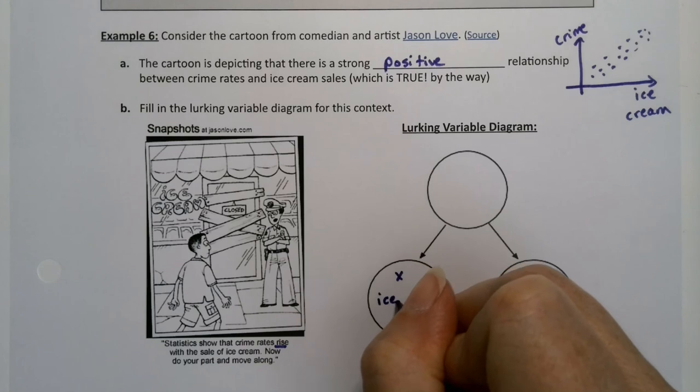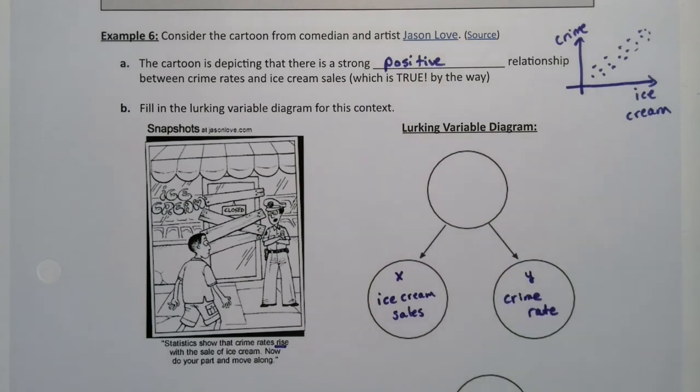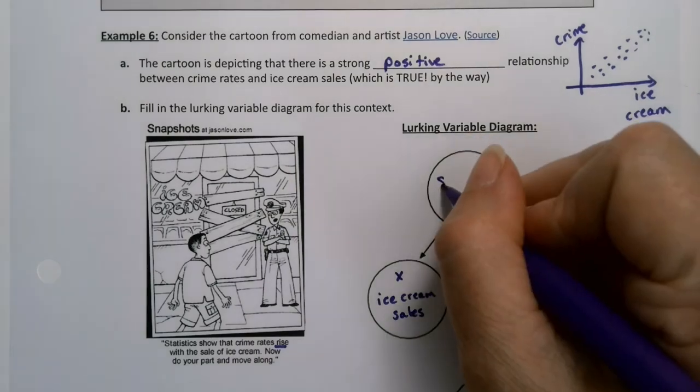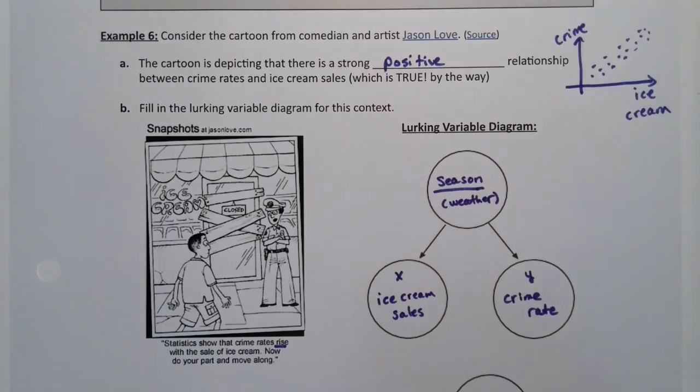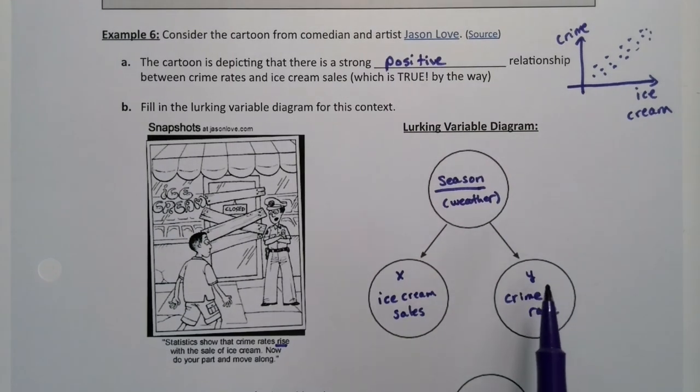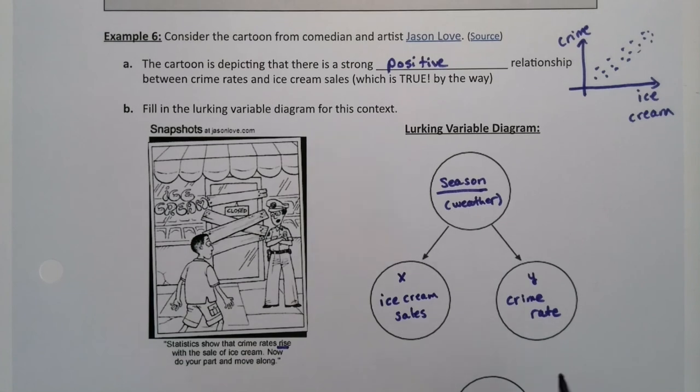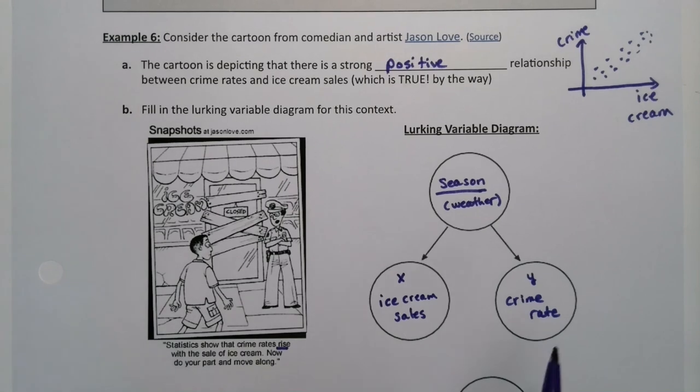Alright, so if we have X which is ice cream over here, ice cream sales, so you'd measure it right, and you have Y which is crime rate, the rate of crime, there is something else that's affecting both of them, namely the season. You could also make an argument for weather. It's summertime, right? Crime rate goes up in the summertime. So cities get hotter, people come out, they tend to get into arguments more. They tend to rob people more because they know people are generally gone for the sake of summer vacations and things like that. So ice cream sales are increasing at the same time crime is increasing because of the season, because it's summertime. Summertime has higher ice cream sales and higher crime rates.